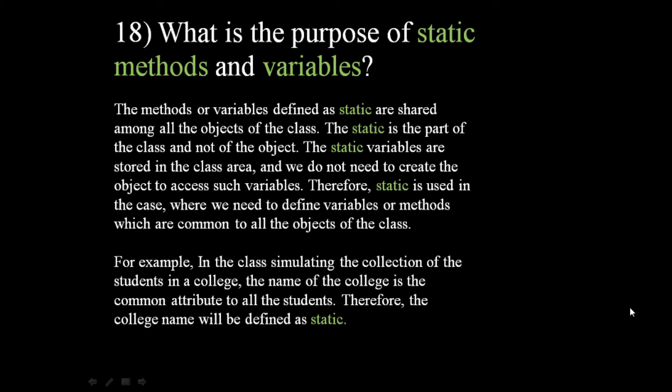For example, suppose in a class there are n number of students, and for each student there is a field called school name. We need not define the school name again and again for each student. So we assign the school name variable as static, so that for each and every student the school name will be set automatically. Such common variables or methods should be defined as static.